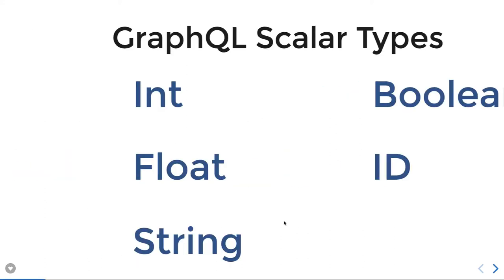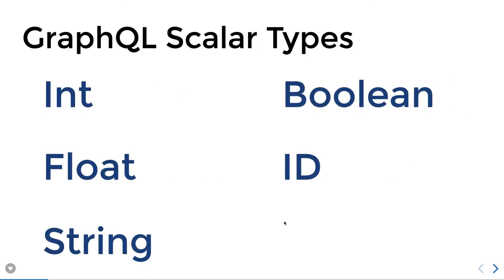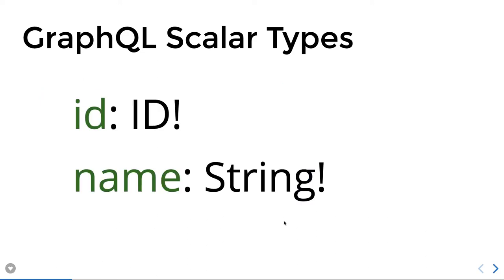Schema Definition Language talks about the types of each and every property you define. For example, a User entity can be a type, and the email, password, username, first name, and last name can be of type String, Float, Integer, Boolean, or ID — these are called primitive or scalar types. User is a resource and we are defining the scalar types that the User type can have, like id and name.